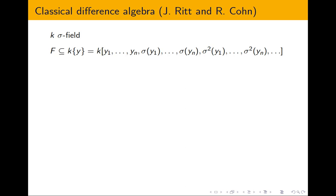We look at the difference polynomial ring, which is a polynomial ring in infinitely many variables: Y_1, ..., Y_n, σY_1, ..., σY_n, σ²Y_1, and so on — denoted K{Y_1,...,Y_n}. This ring naturally has an action of sigma, extended in the way suggested by the names of the variables. In this way, the difference polynomial ring becomes a difference ring.